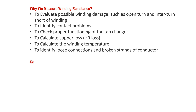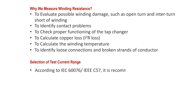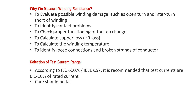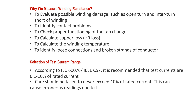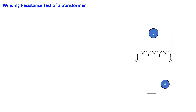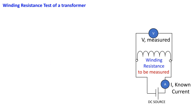Regarding selection of test current range, according to IEC it is recommended that test currents are 0.1 to 10% of rated current. Care should be taken to never exceed 10% of rated current, as this can cause erroneous readings due to heating of the winding.